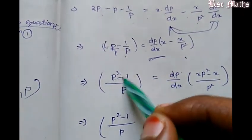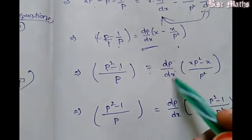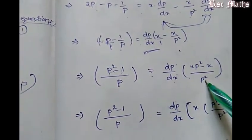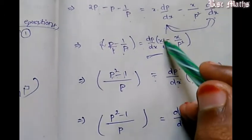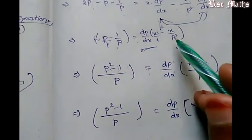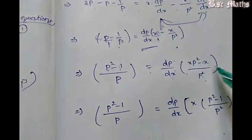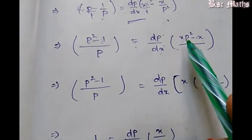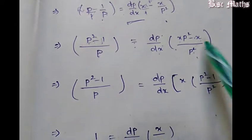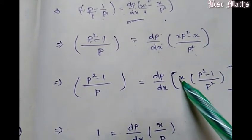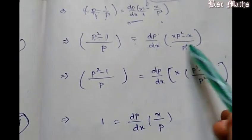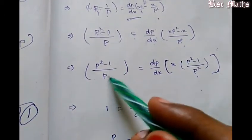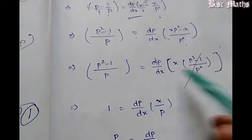p into p gives p squared. dp by dx equals 2. We have p squared minus 1 by p squared. LHS and RHS: p squared minus 1 by p, and p squared minus 1 by p squared. P cancels here, and p cancels again.